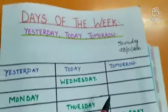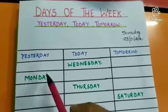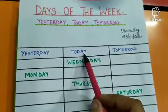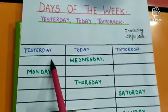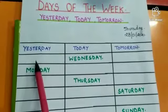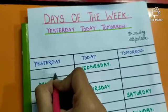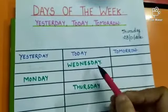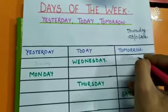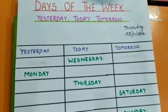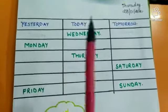Alright, so this is the worksheet — yesterday, today, and tomorrow. Yesterday means beeta hua kal, today means aaj, and tomorrow means aane wala kal. So if today is Wednesday, which day was yesterday? Agar aaj Wednesday hai toh kal kaansi din tha? Yes — Tuesday. So you have to write Tuesday here. And if today is Wednesday, tomorrow will be Thursday. Days of the week — sab ko pata hai, sab ne padhe hai — uske basis pe aapko yeh worksheet solve karni hai.